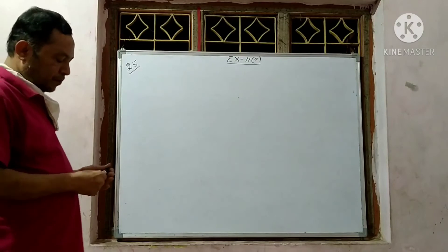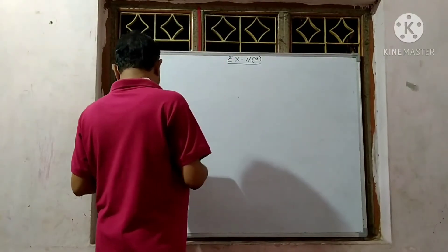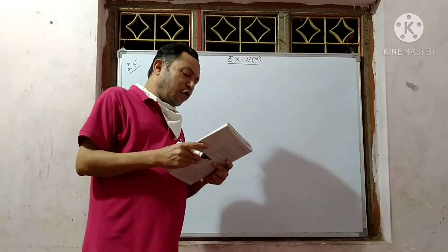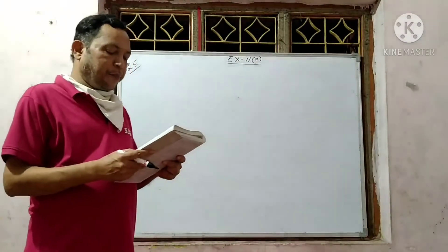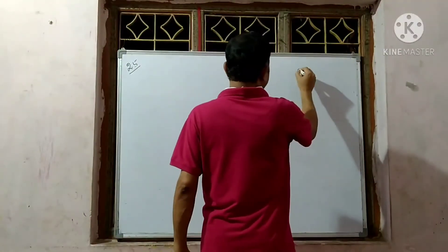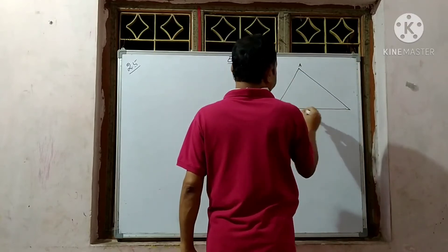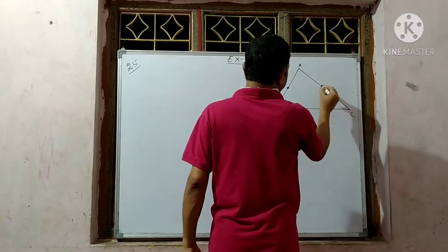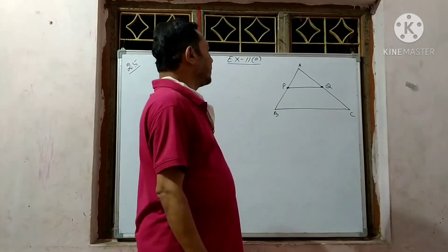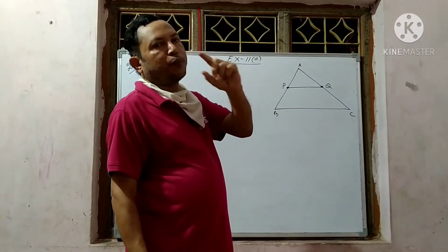Now, number 25. The question is: prove analytically — that is, using coordinate geometry — that the line segment joining the midpoints of two sides of a triangle is parallel to the third side and half of its length. As you see in the figure, this is triangle ABC, and the line segment joining the midpoints is PQ. We have to prove this for any triangle.